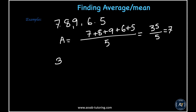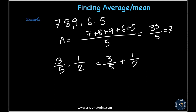We have fractions 3/5 and 1/2. The average or mean is: add them together and then divide by the number of fractions. To add 3/5 plus 1/2, the common denominator is 10.